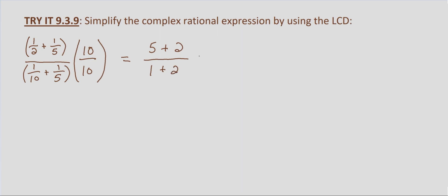So we simply end up with 5 plus 2 equals 7 on top, and 1 plus 2 equals 3 on the bottom, giving us 7/3. We could also rewrite this as 2 and 1/3 — either one of these answers is perfectly acceptable.